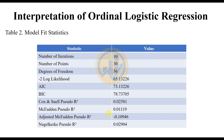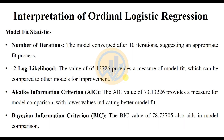The second table presents the model fit statistics. The statistics and values are presented, including the number of iterations — 10 — and the number of parameters — 30. The total parameter statistics are presented in the second table. The model converged after 10 iterations, suggesting an adequate fit process.